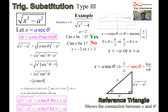That's the concept video for the third type of trig substitution: x equals a secant theta, used when you have the square root of x squared minus a squared. In the next video we'll do an example of this, and then I want you to see some non-standard examples after that.